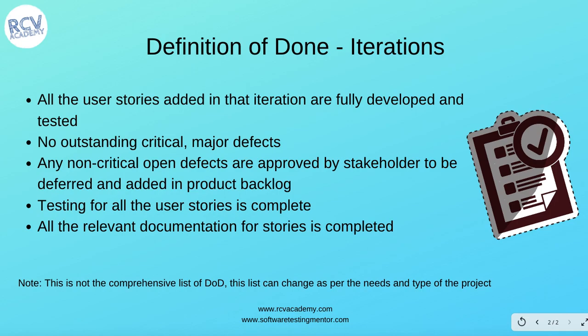The first thing to look at is that all the user stories added in the iteration are fully developed and tested and good enough to be shipped as a product. Any stories you pick in the iteration or sprint need to be fully developed and tested and represent a working product. You should not have any outstanding critical or major defects for any of the user stories picked.